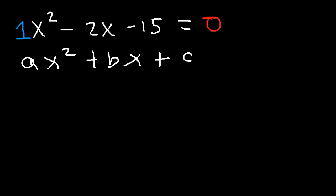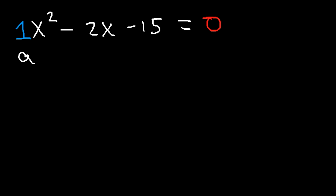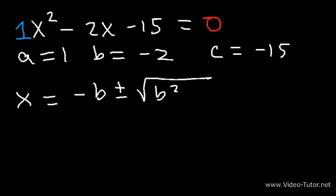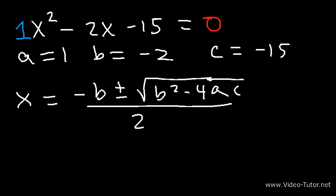So let's go ahead and write that. a is 1, b is negative 2, and c is negative 15. Now here's the quadratic formula: x is equal to negative b plus or minus the square root of b squared minus 4ac, divided by 2a.